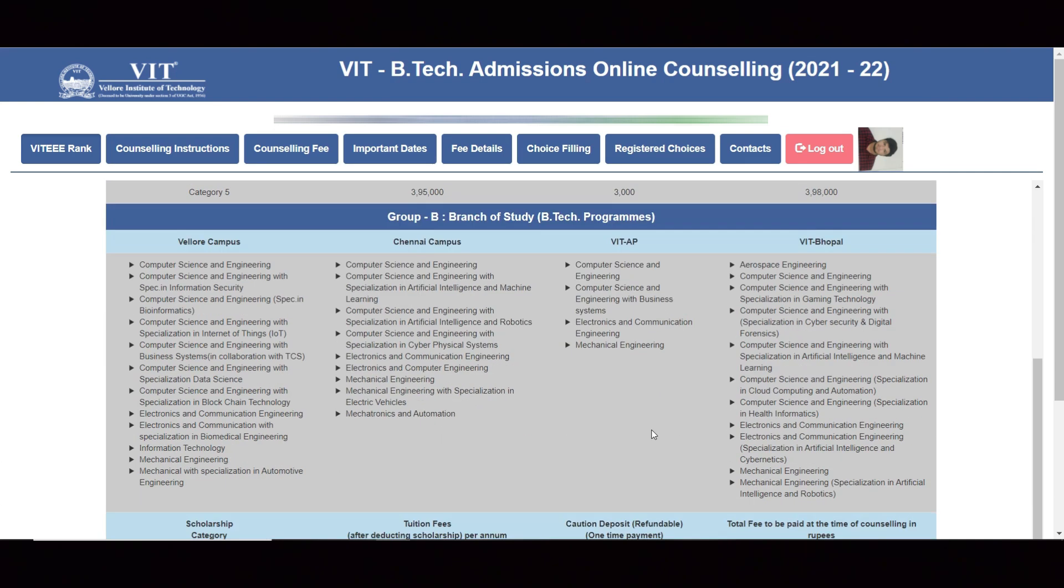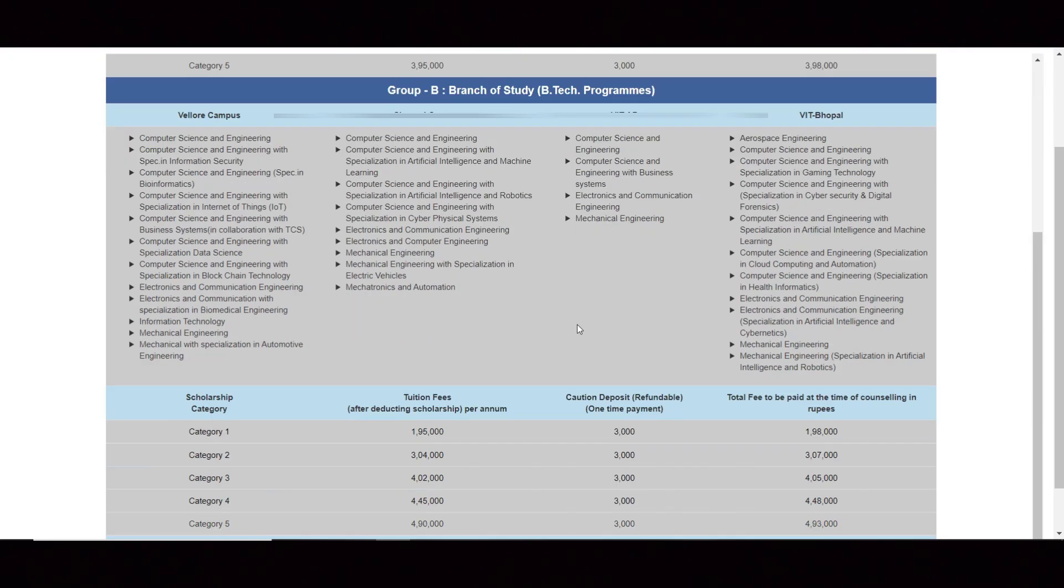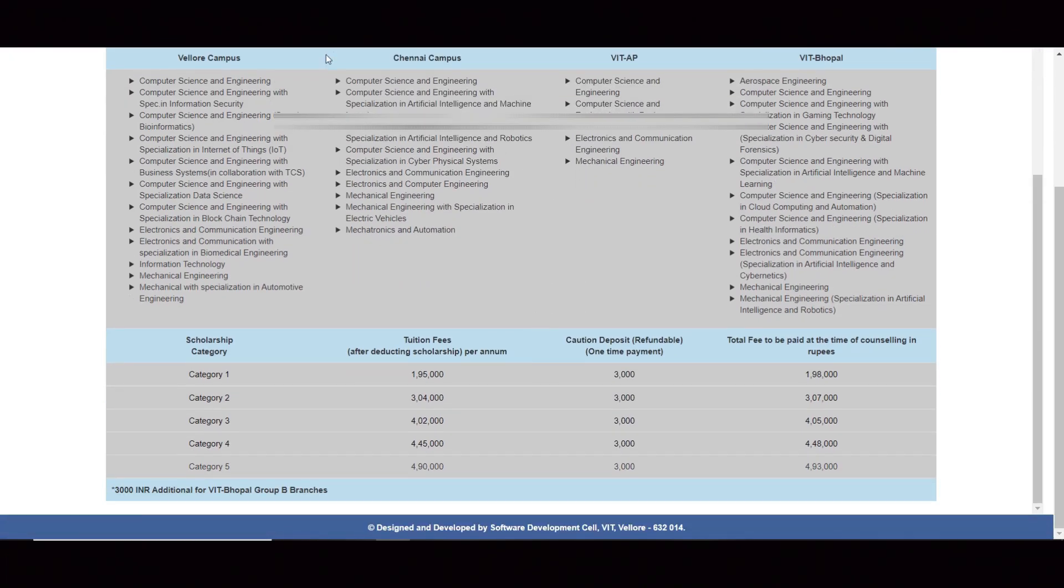When it comes to Group B, mostly CSE specializations will be there. You can see campus-wise they have mentioned. Category 1 fees is 1.95 lakh tuition cost and 3,000 fees.